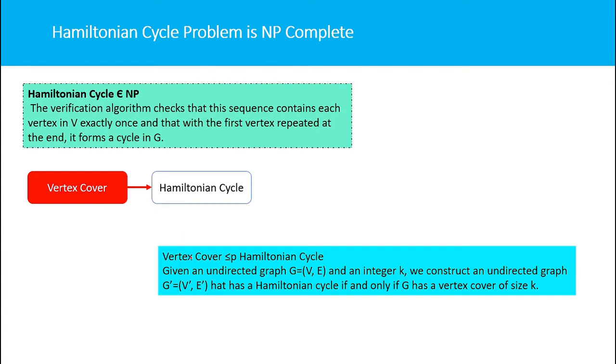=(V',E') that has a Hamiltonian cycle if and only if G has a vertex cover of size K. That reduction method is quite complicated, so we'll leave it for now and discuss it later.